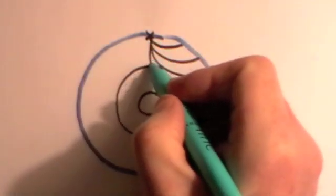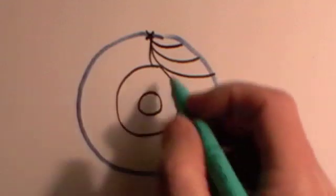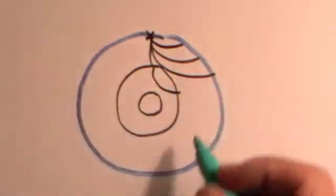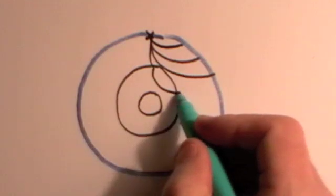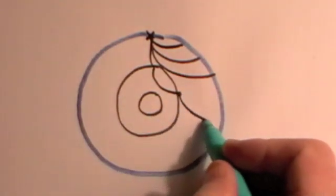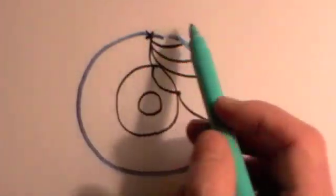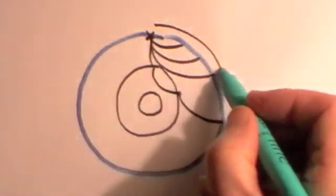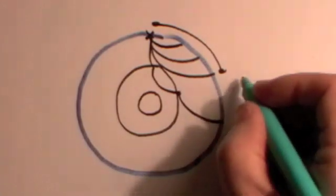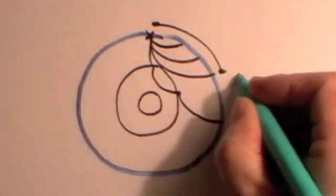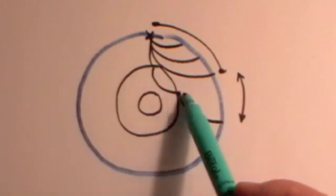But when it gets to the outer core, which is liquid, there will be a significant refraction. And then when it gets to that surface here between the outer core and the mantle, there will be another refraction like this.